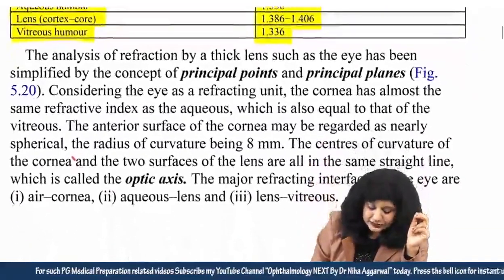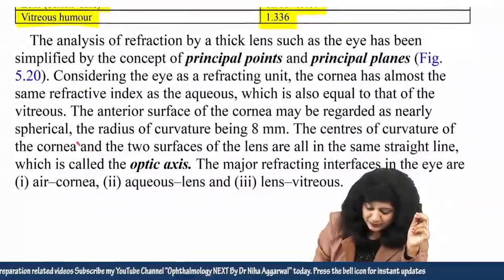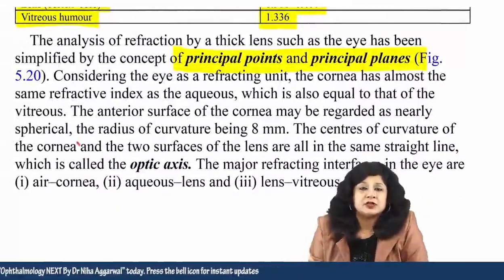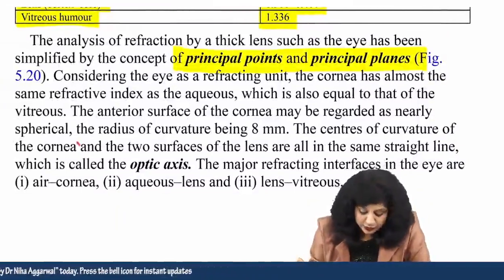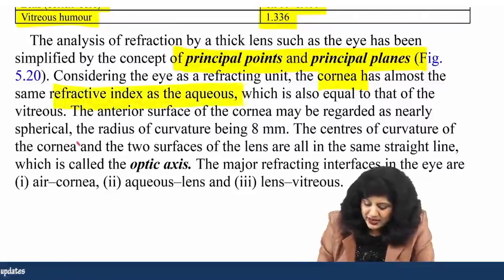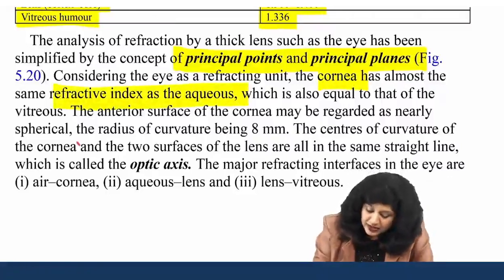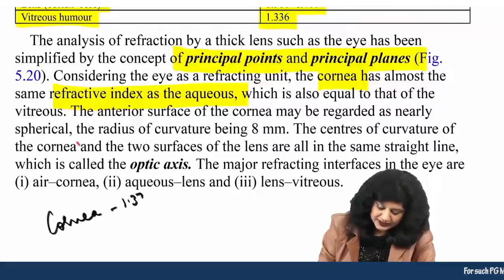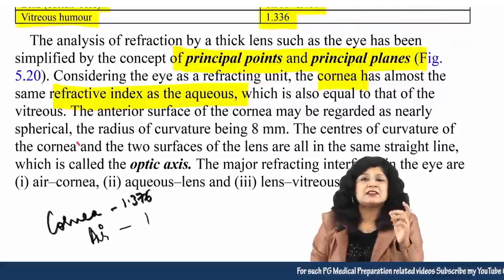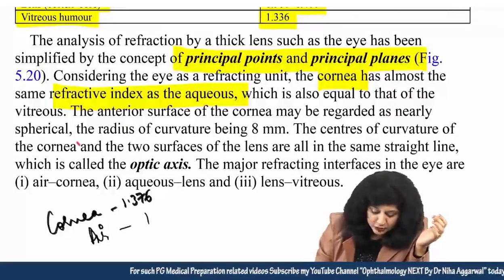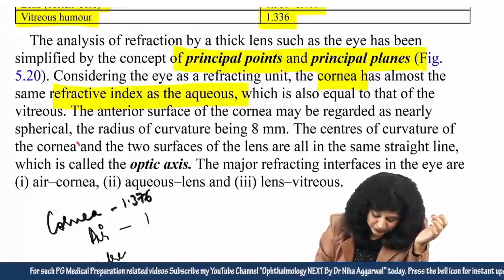The analysis of refraction by a thick lens such as the eye has been simplified by the concept of principal points and principal planes — the optical system of the eye. The cornea has nearly the same refractive index as the aqueous humor, and the aqueous is also comparable to the vitreous at 1.33, though not exactly equal.